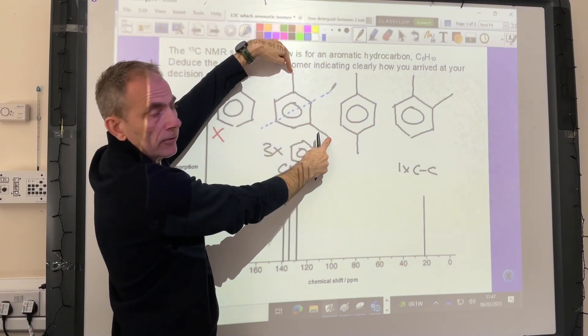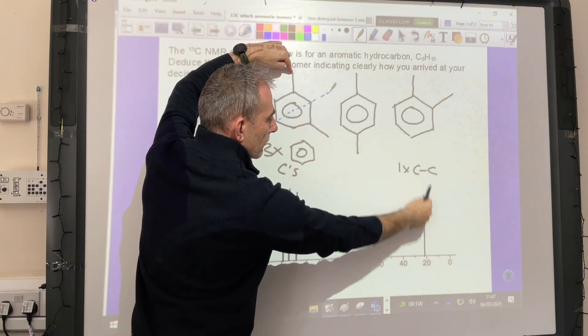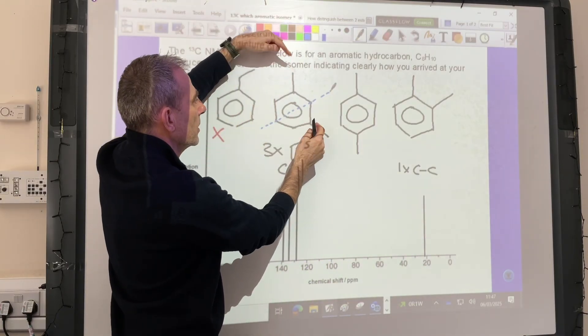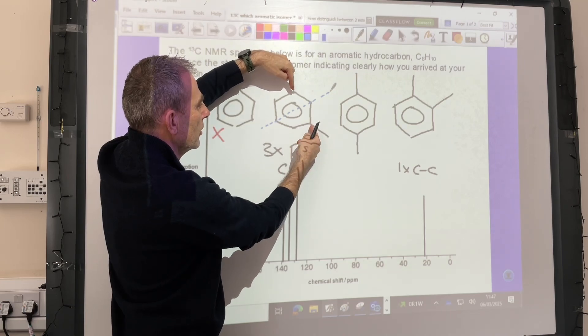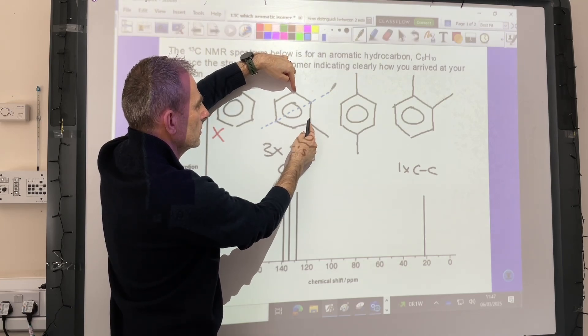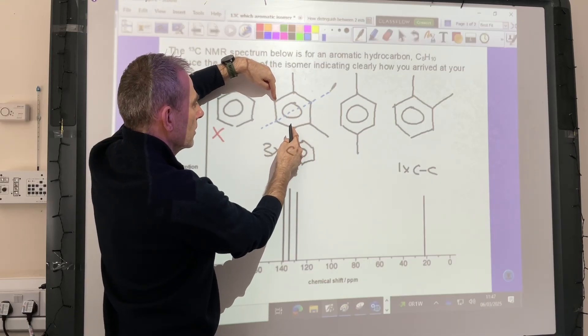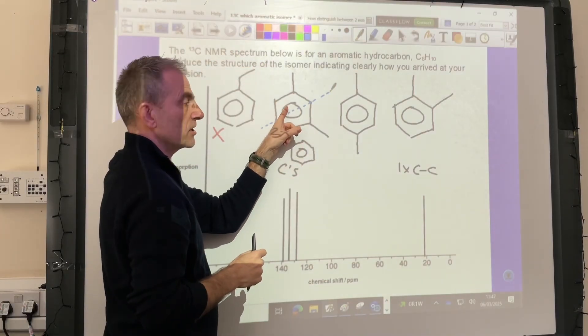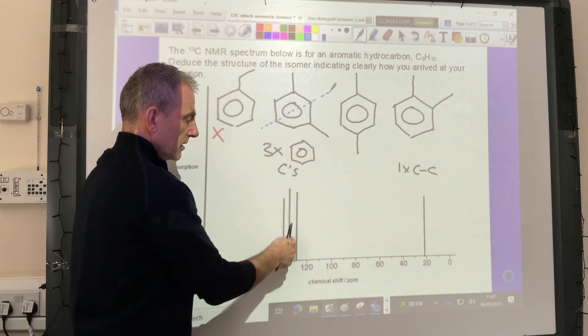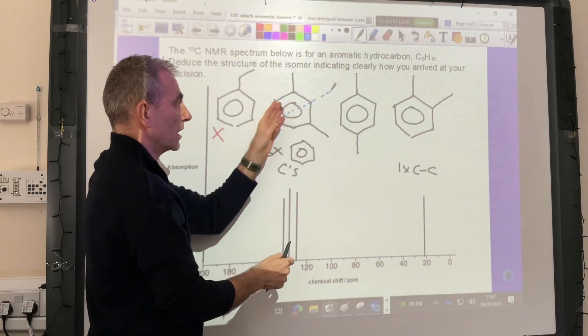That would give one signal there. What about the benzene carbons? We've got one, two, three, four. So this one would give four peaks in this region here, so that's not the right answer.